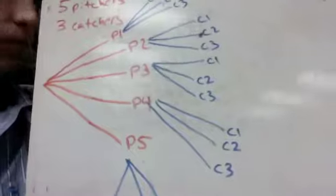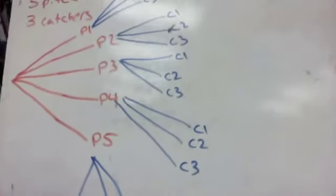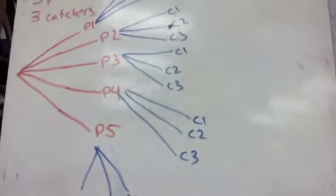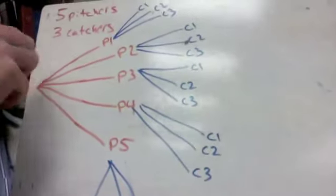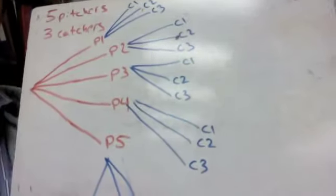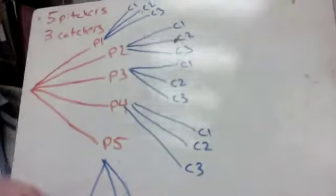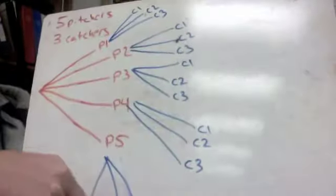Here would be a solution for problem 3 where we're dealing with the pitchers and catchers and the combinations between the two. We start with 5 pitchers. So I've just got my 5 lines drawn out because we have 5 choices for pitchers. No matter what pitcher you pick, you always have 3 choices for catchers. So off of each pitcher, I've got my 3 choices for catchers.